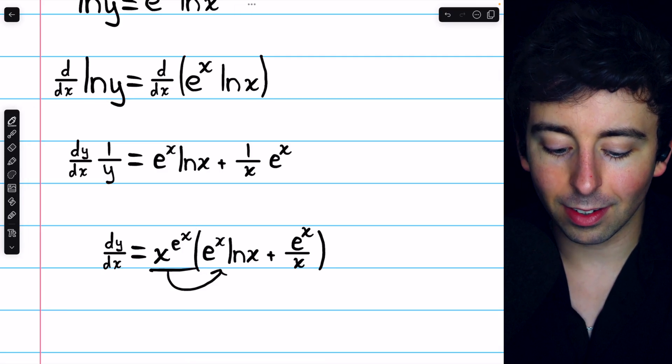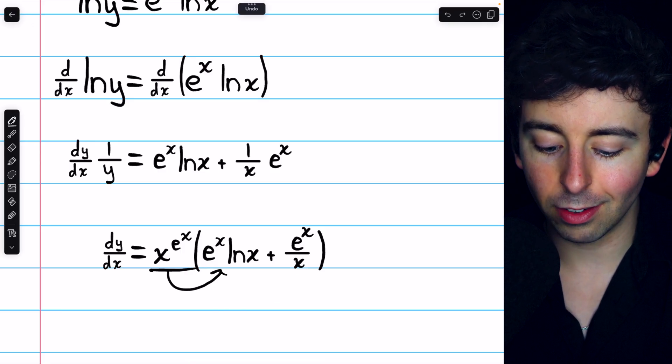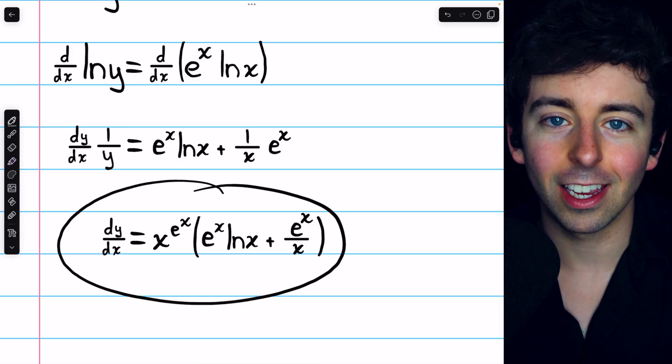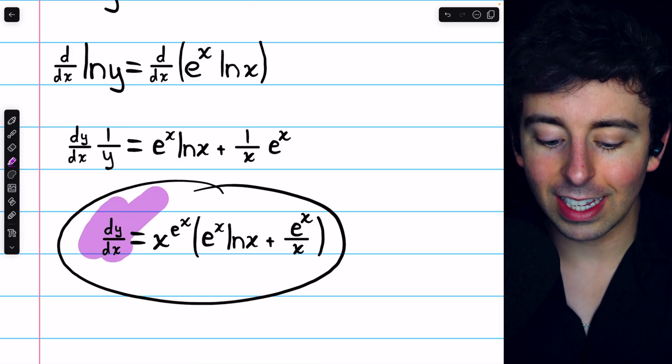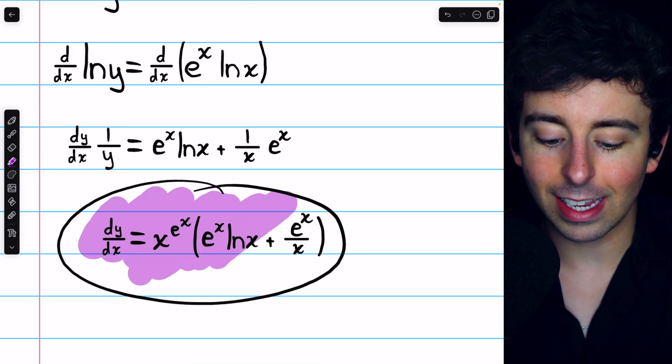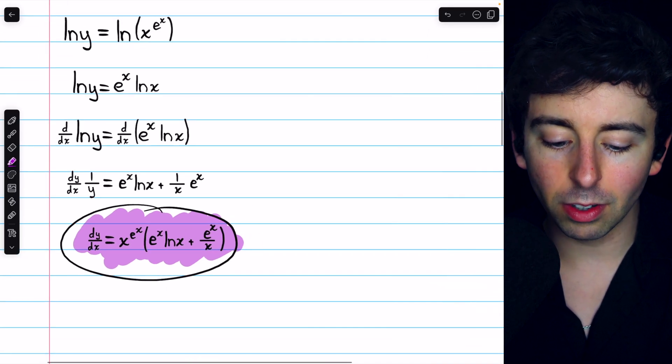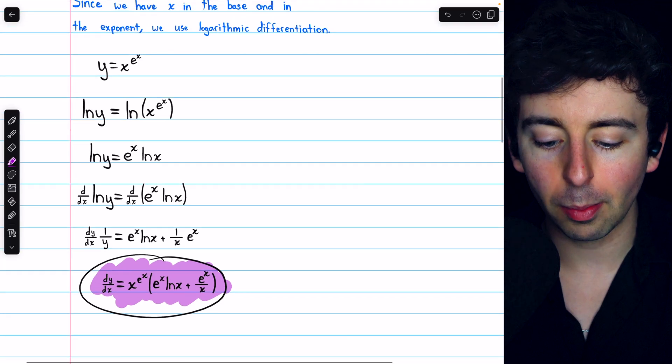Now, you could try distributing this and rewriting this a few different ways, but frankly, I think this is as good a way to write it as any. So that's the derivative of x to the e to the x. It's x to the e to the x times e to the x ln x plus e to the x over x. And that's how to use logarithmic differentiation to solve this problem.